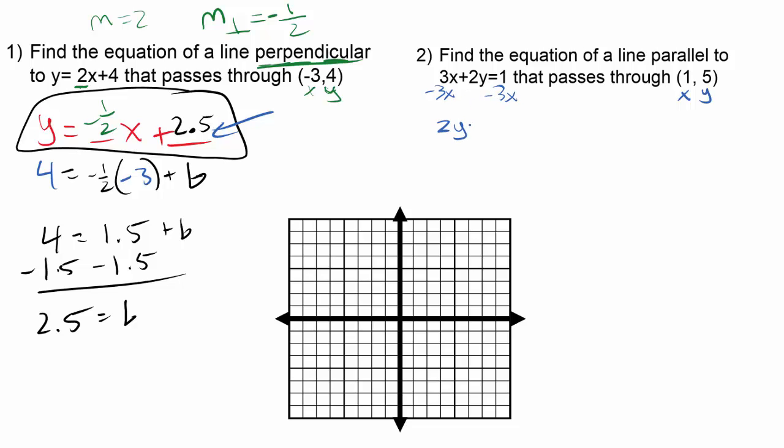I'll move the 3x over, that gives me 2y equals negative 3x plus 1. And then I'm going to divide each of these pieces by 2. So I'll get y equals negative 3 over 2x plus 1 half.